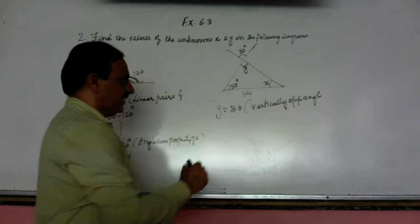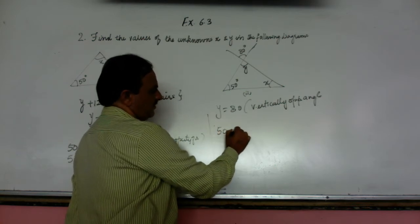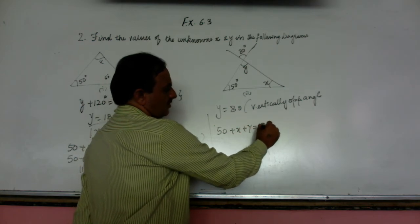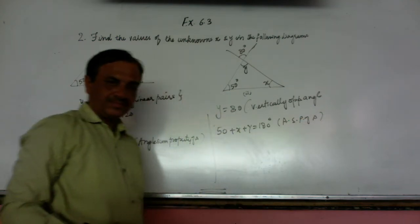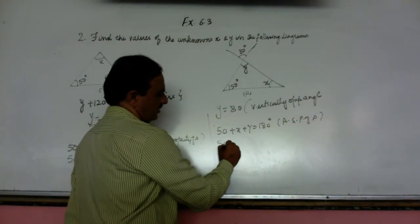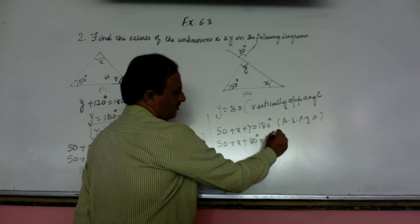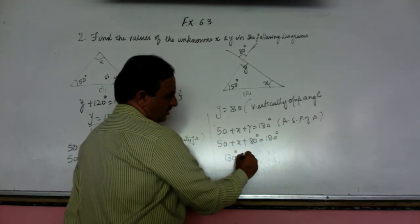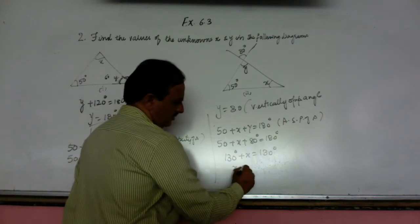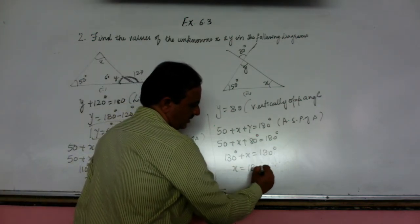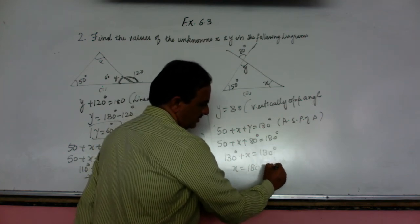Now we got the value of y as 80 degree. So in one triangle, 50 plus x plus y is equal to 180 degree, angle sum property. We got the value of y, so 50 plus x plus 80 is equal to 180 degree. 130 plus x is equal to 180 degree. So x is equal to 180 minus 130. X is equal to 50.